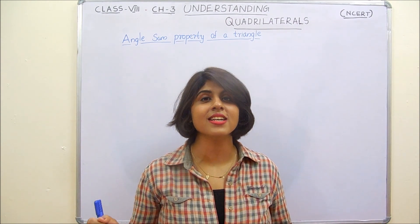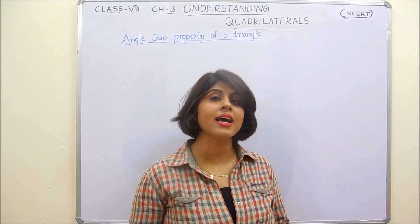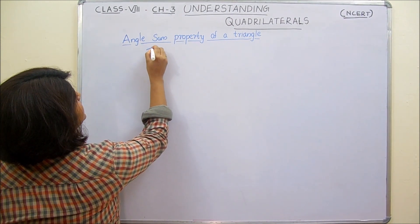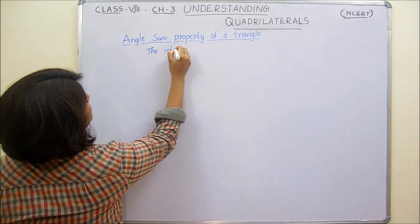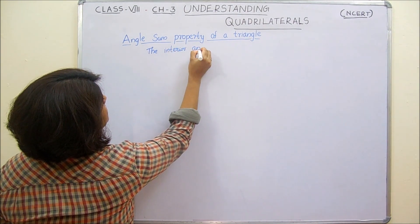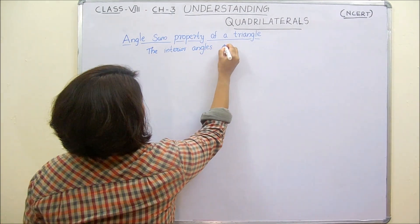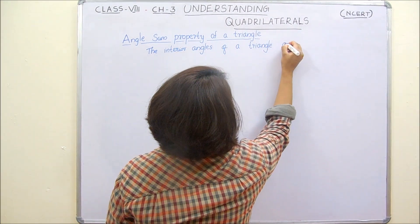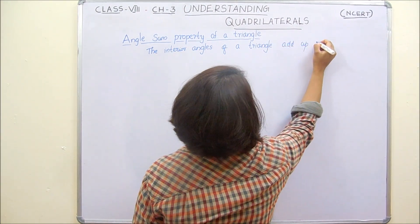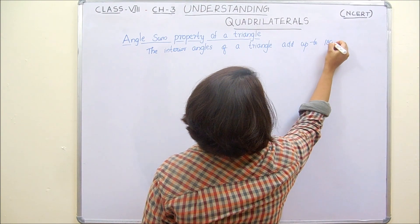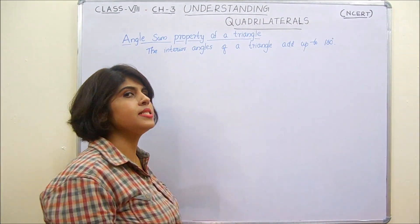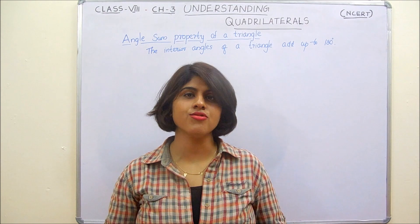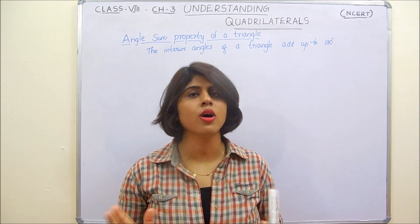The angles and property of triangles states that the interior angles of a triangle add up to 180 degrees. Every triangle has three angles — whether it is acute, obtuse, or a right-angled triangle — the sum of interior angles should always be 180 degrees.